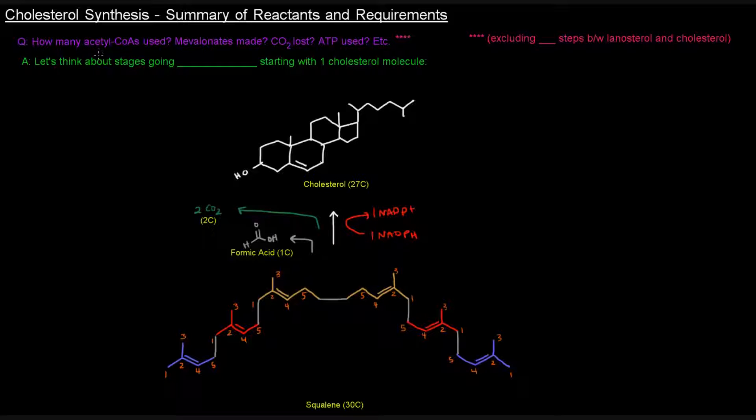The question would be, how many acetyl-CoAs are used, mevalonates made, CO2s lost, ATPs used, and things like that. I want to think about that here in this video, but one thing that I have to note is that anything that I say will be excluding the 19 steps between lanosterol and cholesterol because I don't actually know what happens there. So everything else that we've covered, we should think about what's used and what happens there.